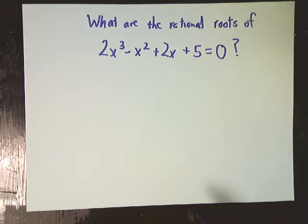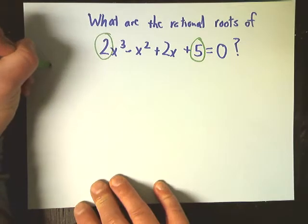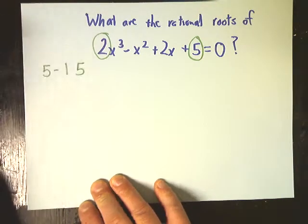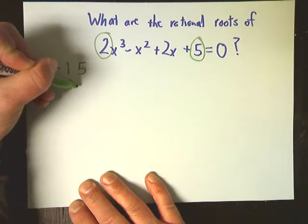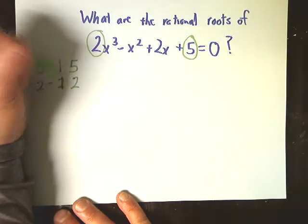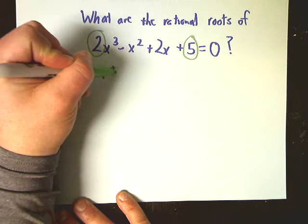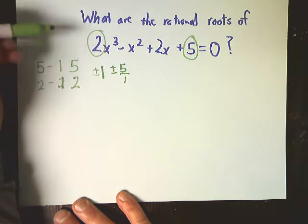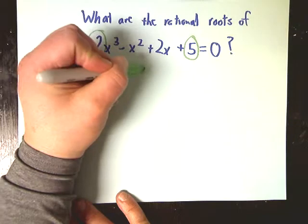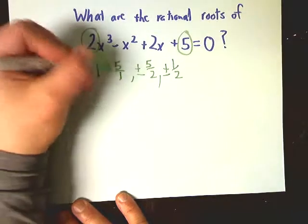What are the rational roots of 2x³ - x² + 2x + 5? To figure this out, we only need to look at the first and last numbers. Looking at the 5: the factors of 5 are just 1 and 5. The factors of 2 are just 1 and 2. The possible rational roots are: ±1/1, so ±1; ±5/1, so ±5; ±5/2; and ±1/2. Those are all of the options I have for roots.